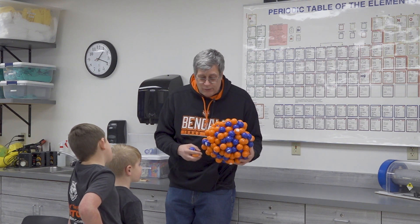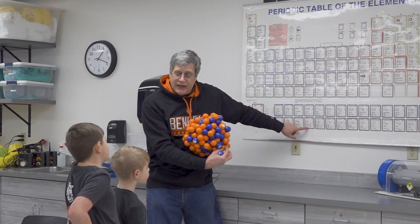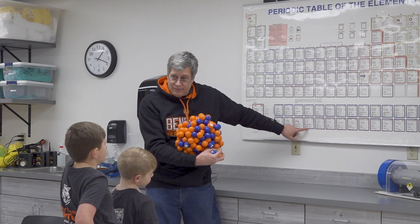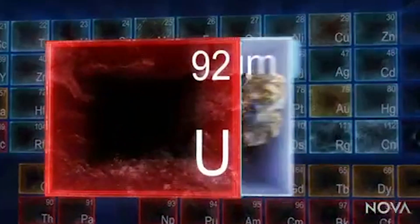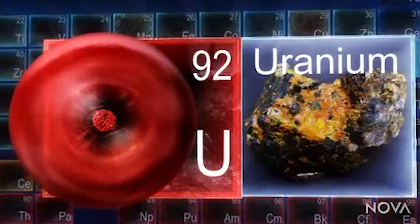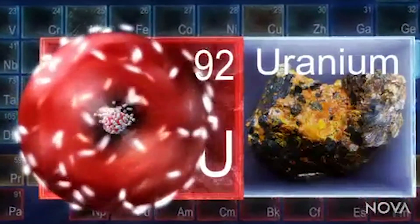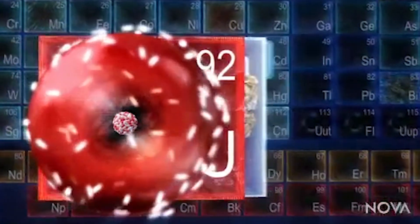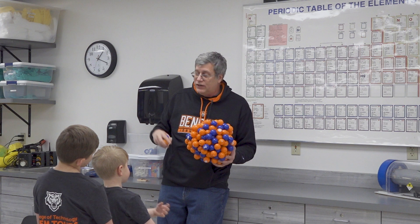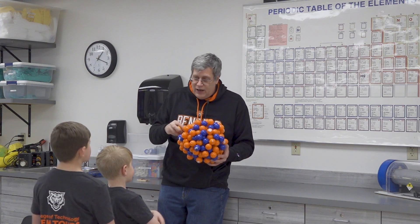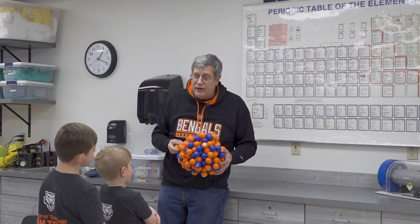The nucleus is what we are dealing with when it comes to uranium. In the atom, the nucleus sits at the center and outside it are a bunch of electrons flying around at the speed of light. It's the outer shell electrons that interact in chemistry, but it's the nucleus that deals with nuclear energy and nuclear matter.